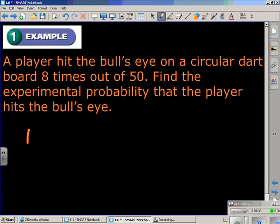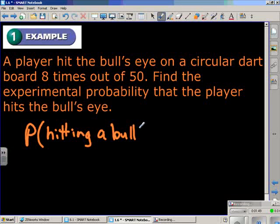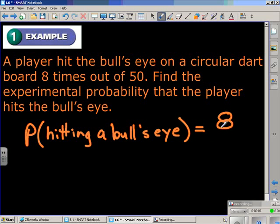To write that out, we use a capital P indicating the probability and parentheses to enclose the event that will be successful. So the probability of hitting a bullseye. And that should be pretty simple. The expected number of times he's going to hit it, or the number of times he actually did hit it, was eight. That would be the successful outcomes or the number of times the outcome occurred.